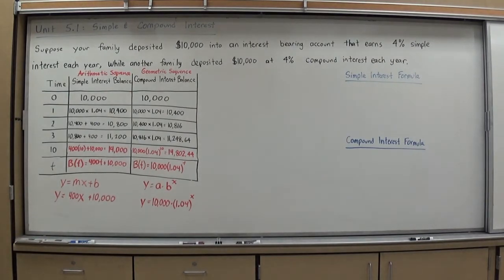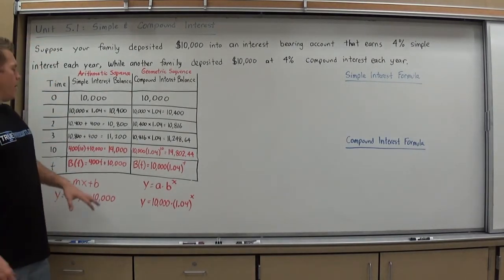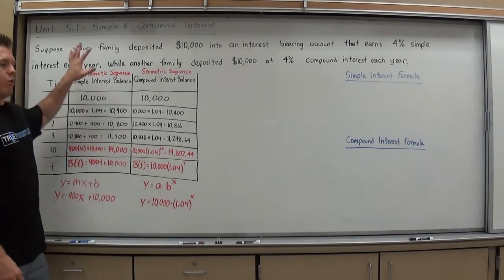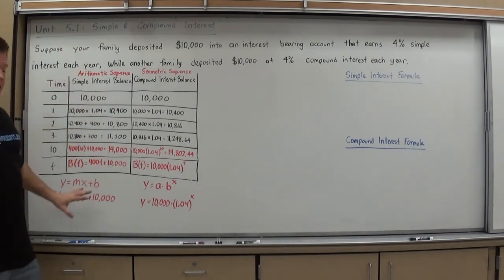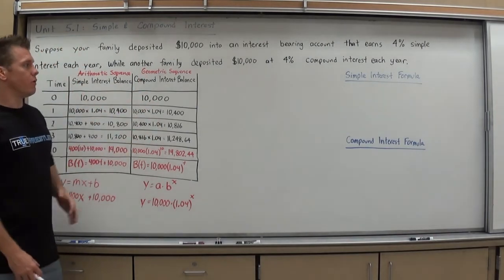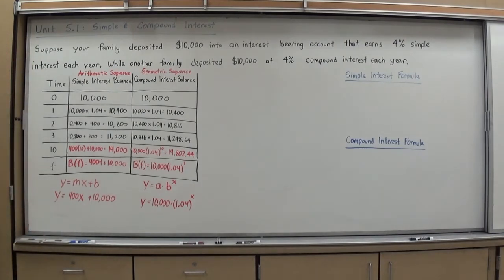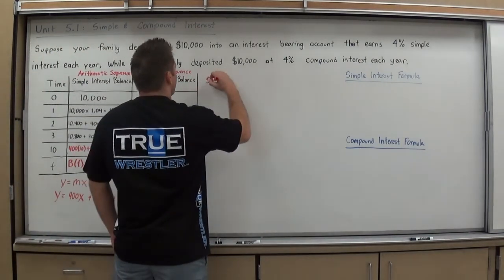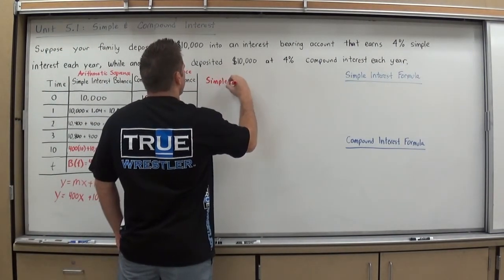And then, of course, I need to round. So my answer would be $14,802.44 in 10 years. So what we know now is a general form for simple interest and compound interest. One is arithmetic, so it's linear. One is geometric, so it's exponential. And now that I know that, I can make a simple interest formula for it. Before I write that formula, let's do one last example. Because if we did start a college fund, you would likely get it 18 years later. So let's see the big difference between these accounts.